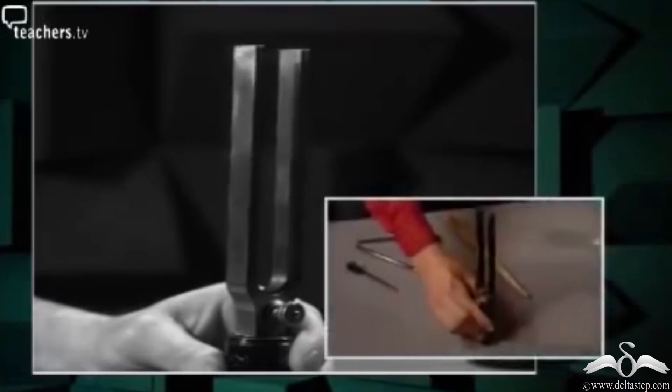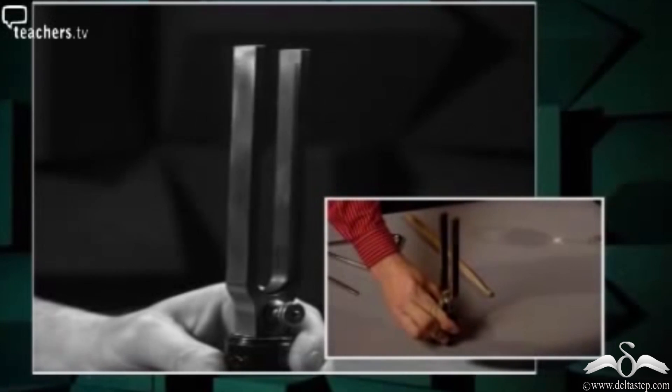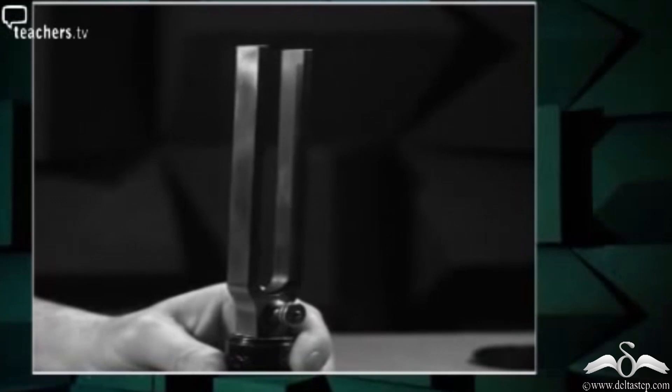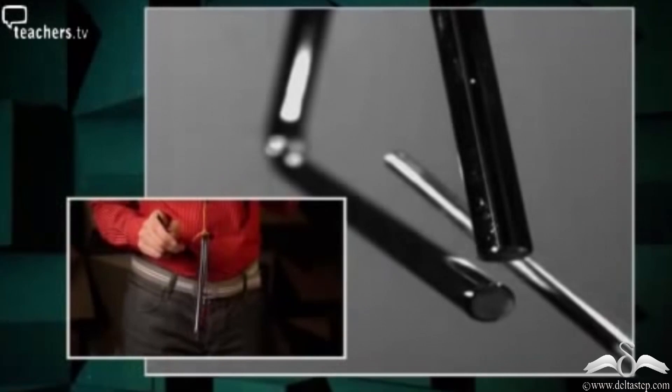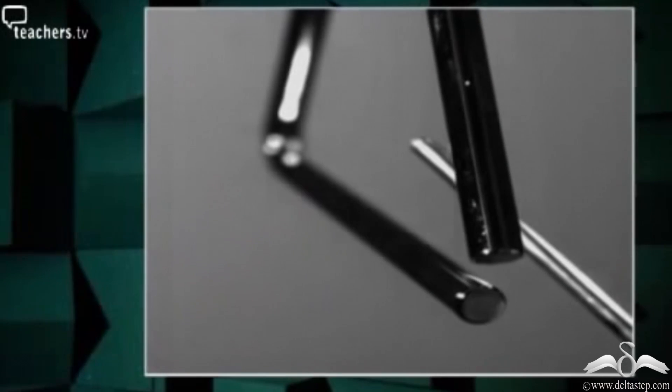As we see it in slow motion, look at how the tuning fork is vibrating. Also notice how the triangle vibrates when it is hit with the rod.